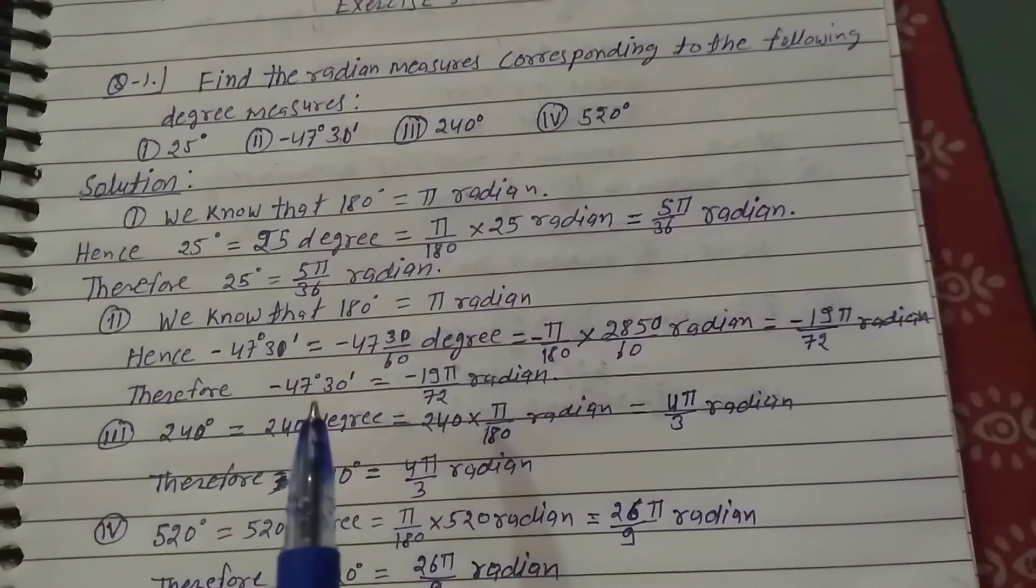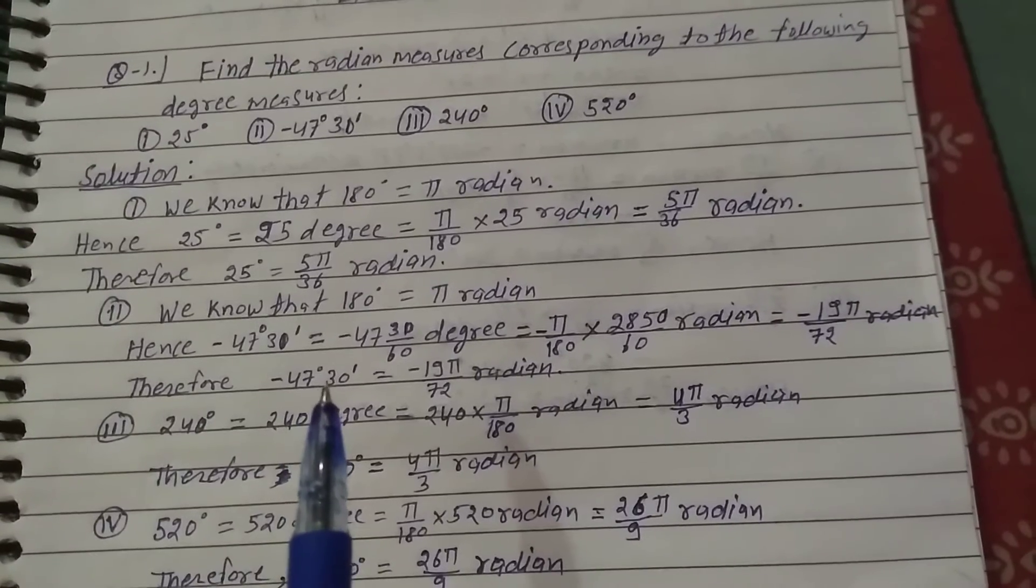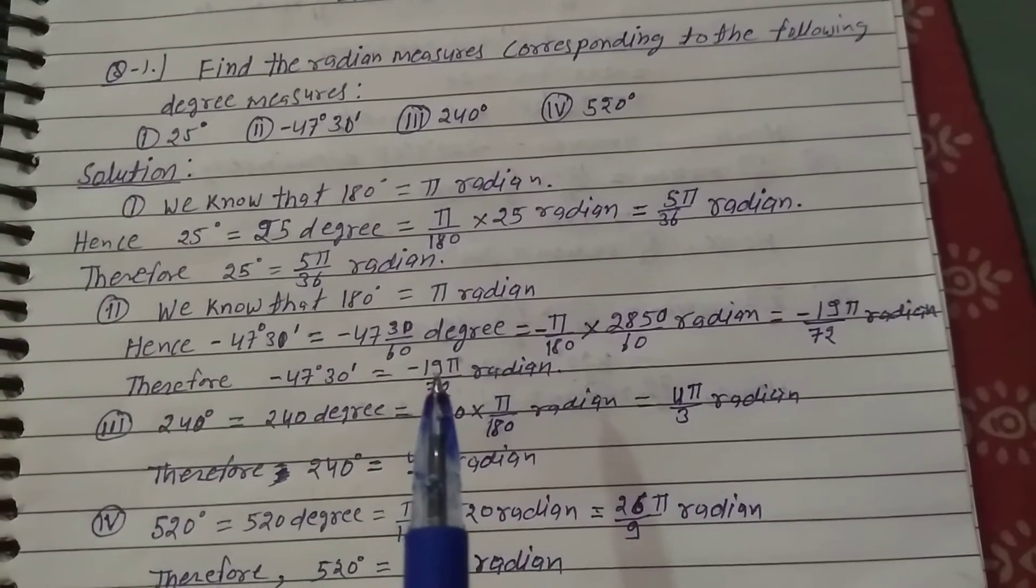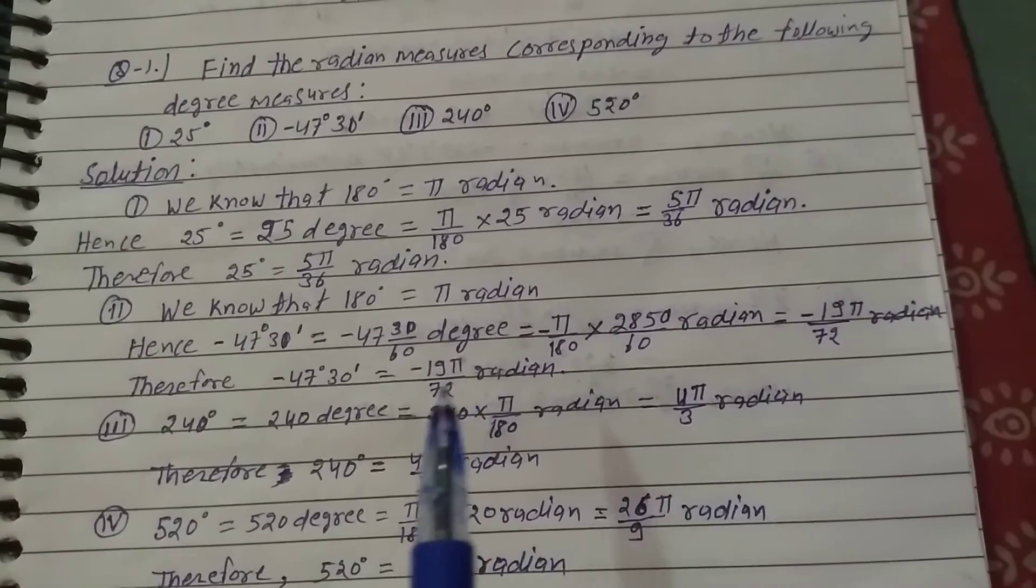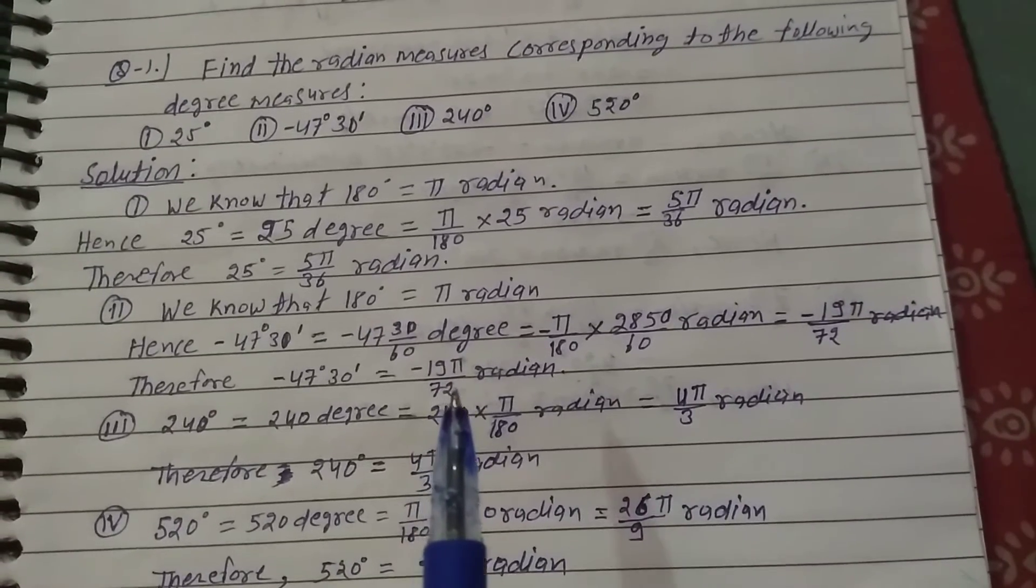Therefore, -47 degrees 30 minutes equals -19π/32 radians.